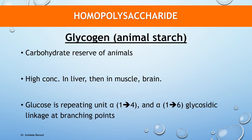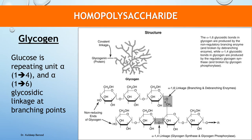Glycogen is often referred to as animal starch because it is the carbohydrate reserve in animals. It is present in high concentrations in the liver, followed by muscle and brain. Glycogen is also found in some plants lacking chlorophyll, like yeast and fungi. Its structure consists of repeating units of glucose joined by alpha-1,4 glycosidic bonds and alpha-1,6 glycosidic bonds at branching points. The alpha-1,6 linkage is only present at branching points.